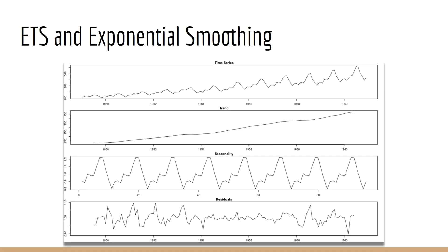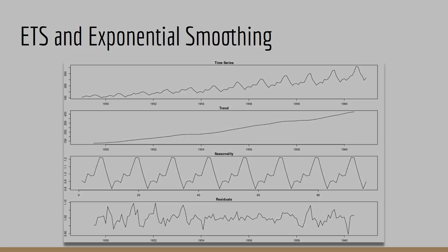The first classical time series method we will discuss is called exponential smoothing, or ETS. This kind of model is ideal for time series which are made up of error, trend, and seasonal components. We'll apply this method to both sales data and financial time series.